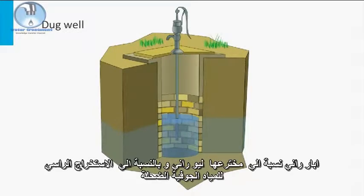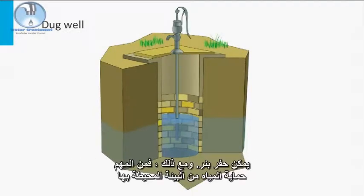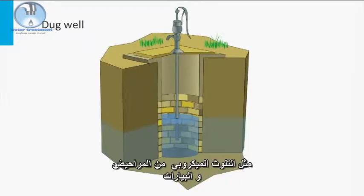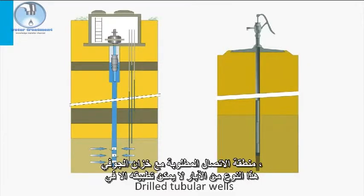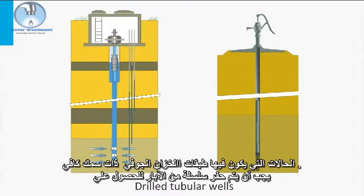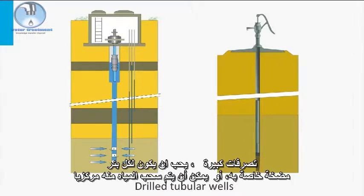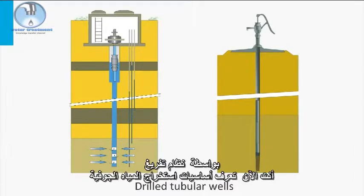For the vertical abstraction of shallow groundwater, a dug well can be used. However, it is important to protect the water from its surroundings, such as faecal contamination by latrines or livestock. The most widespread method for vertical abstraction is drilled tubular wells. These can only be applied where aquifers have enough thickness. A series of wells must be constructed for larger capacities, and every well can be supplied with its own pump or centrally drained with a vacuum system.